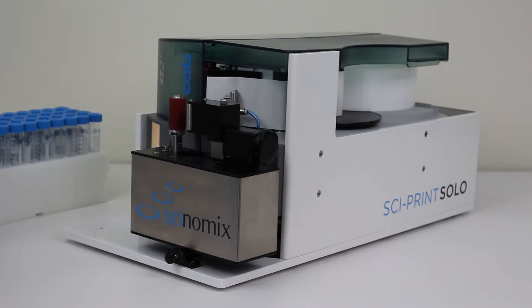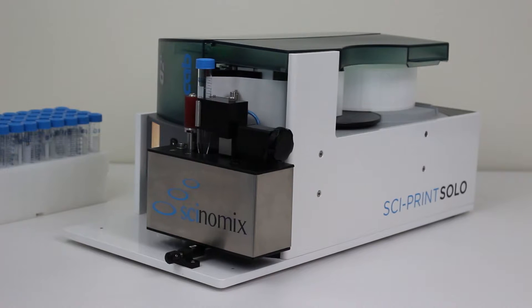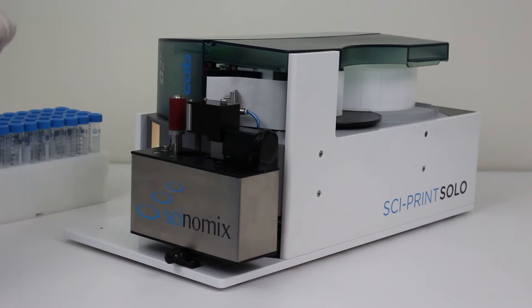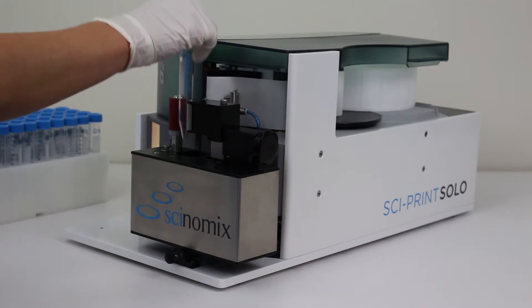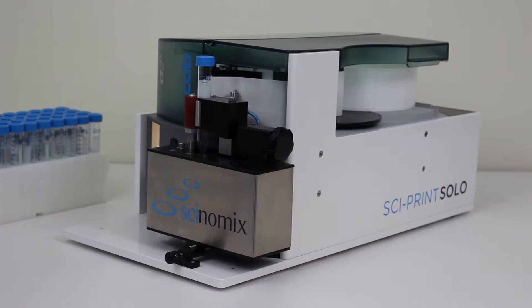For working with smaller quantities of tubes, Synomics offers a semi-automated vial labeler, the SciPrint Solo. The system is used for manual labeling of tubes ranging from 0.5 milliliters to 50 milliliters. The SciPrint Solo is commonly integrated into larger automated systems such as the TCAN EVO.